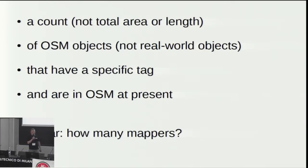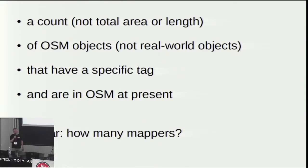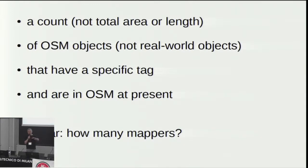Importantly, tag info does not tell you how many people are actually using the tag. We have seen that there are 4.8 million objects tagged natural equals wood and 68,000 tagged as a transformer, but we don't know how many people are actually behind this. It might be one crazy guy adding all the transformers and everybody else not being interested. For a closer look, I need to leave the nice display and switch to a shell prompt where you actually have to enter some commands.